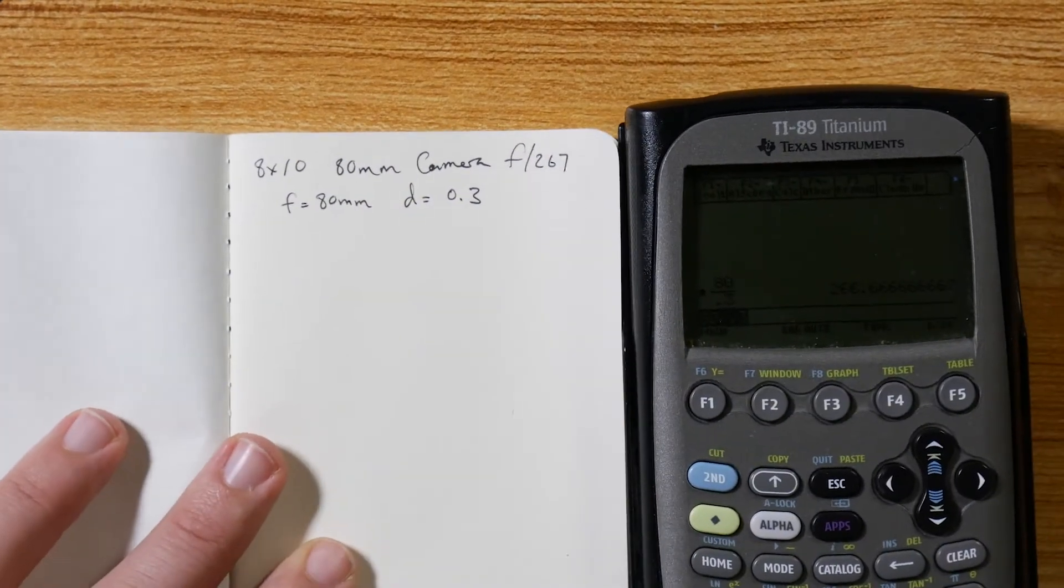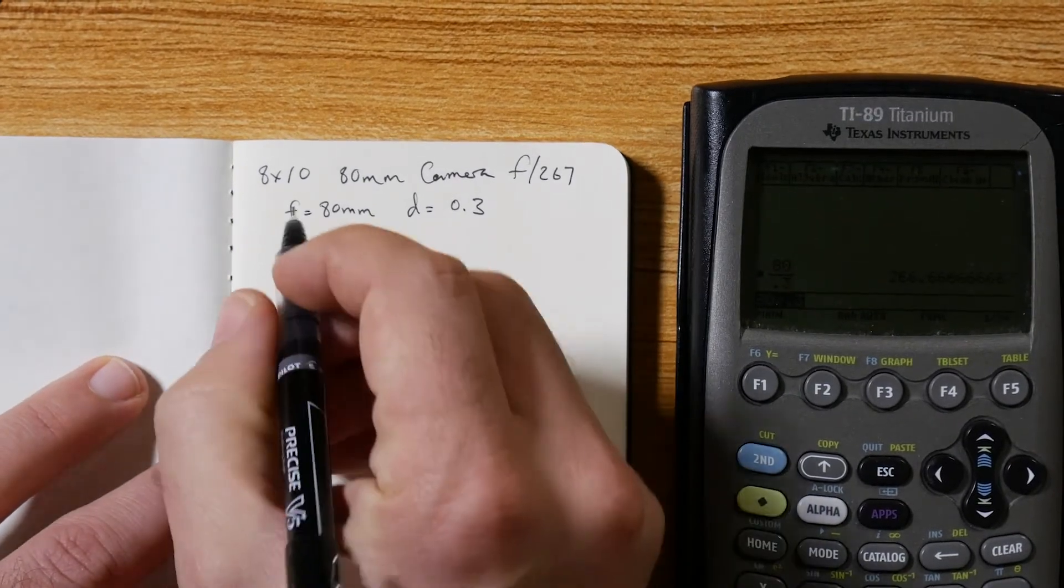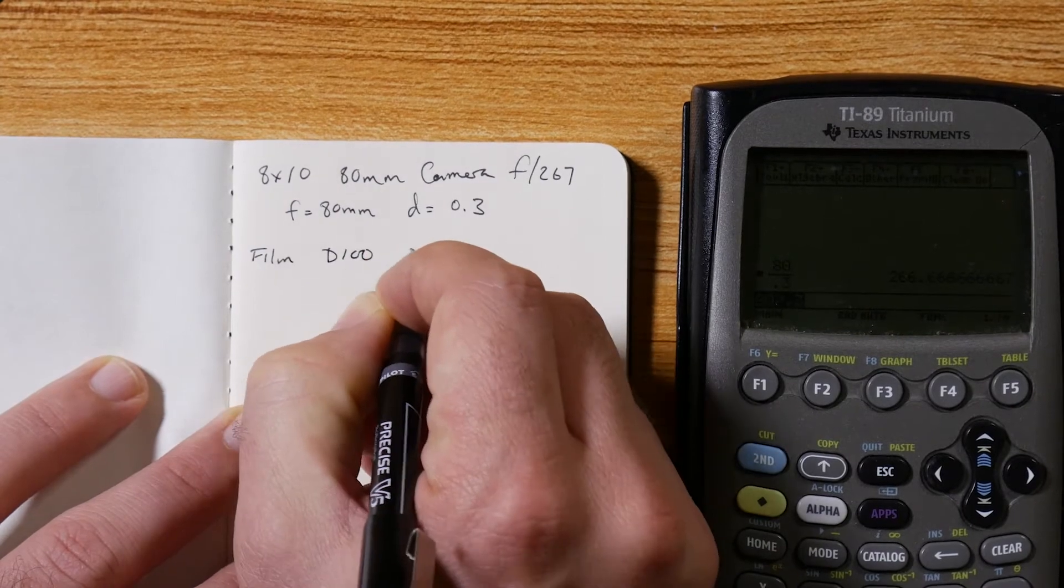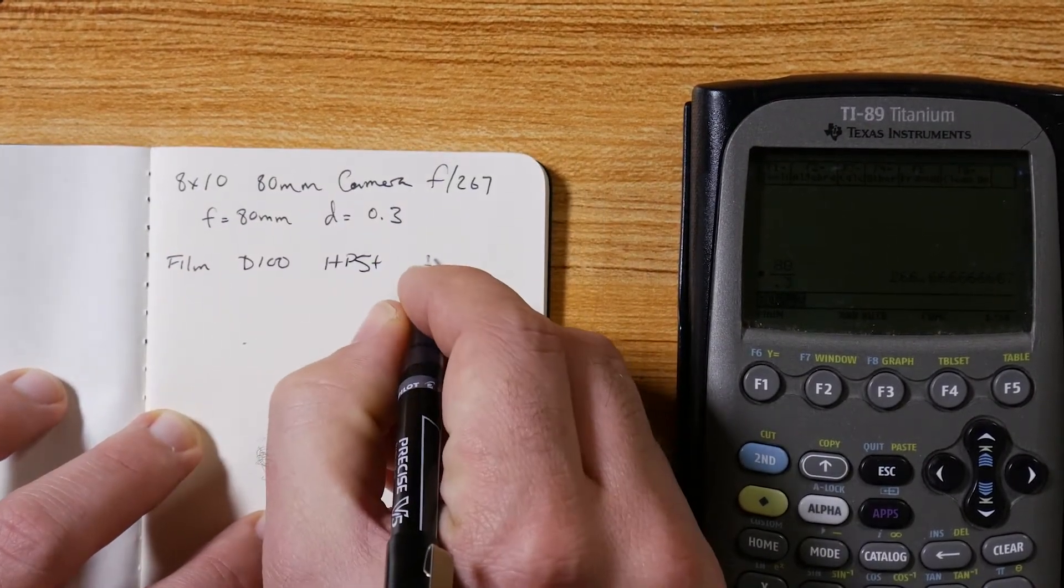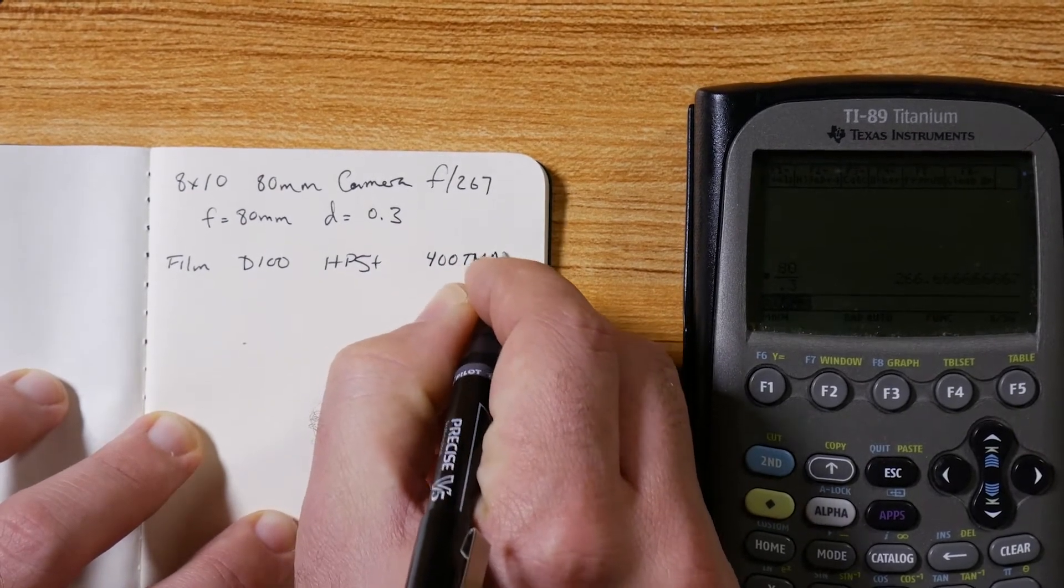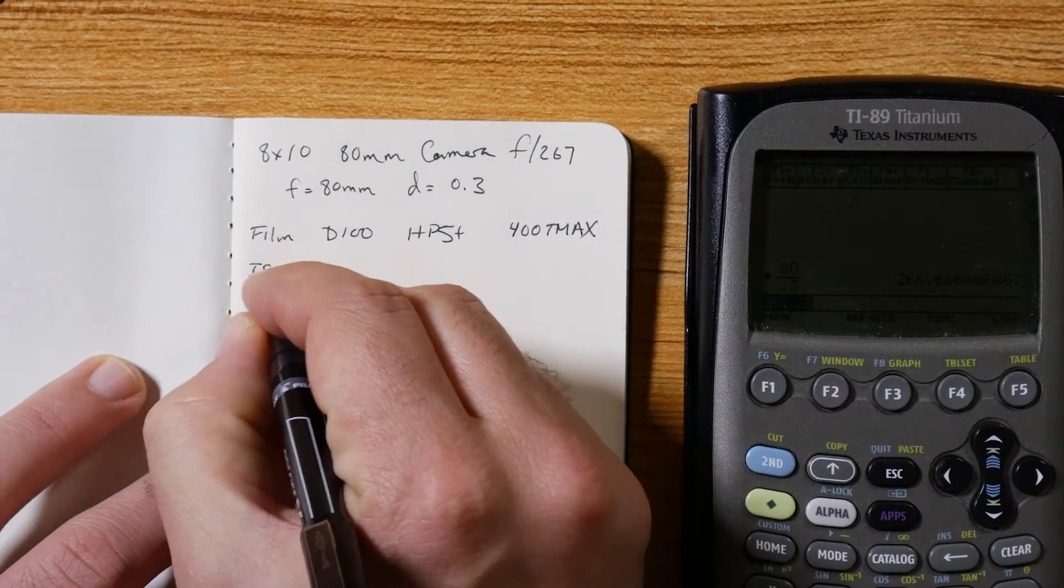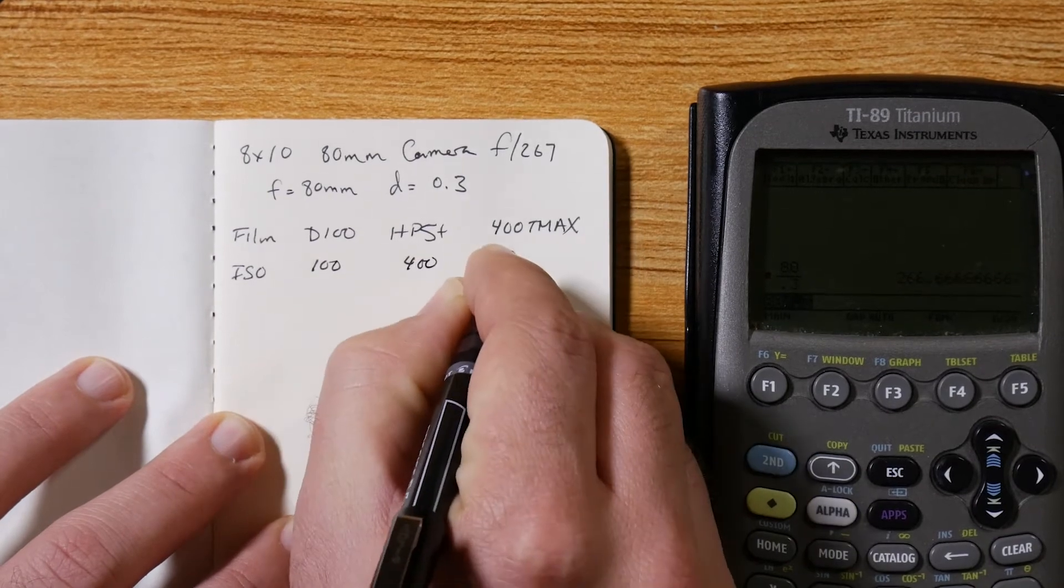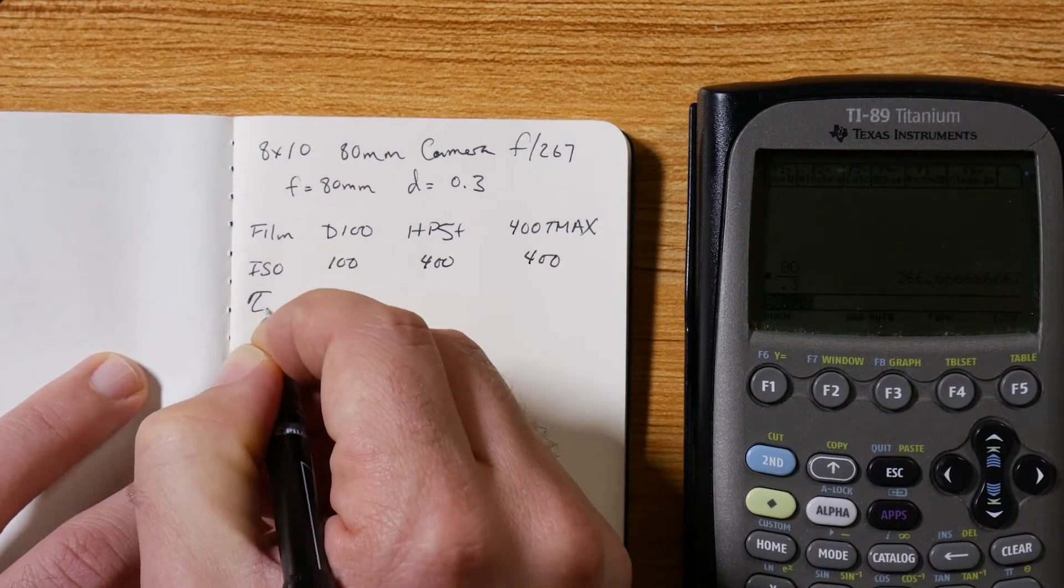So now we have to put our films down. For my 8 by 10 camera, I use Delta 100, HP5, and sometimes I use 400 T-max from Kodak. We're going to write down the ISO values: it's 100, this is 400, this one's 400. I'm going to denote tau at 128.